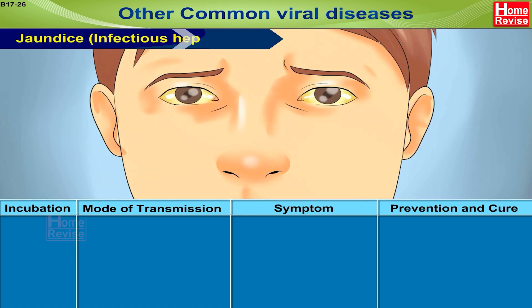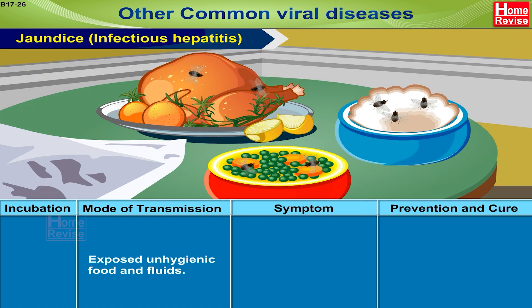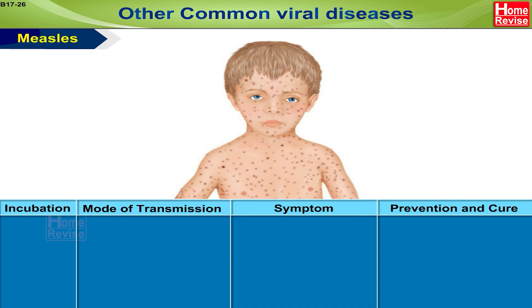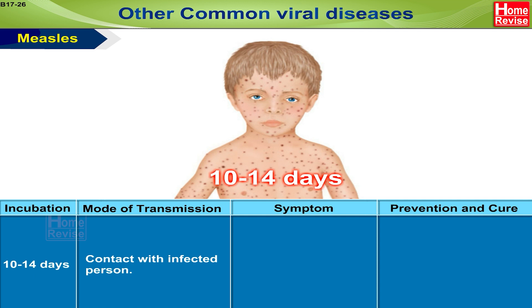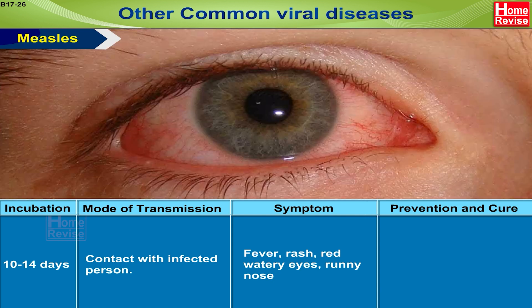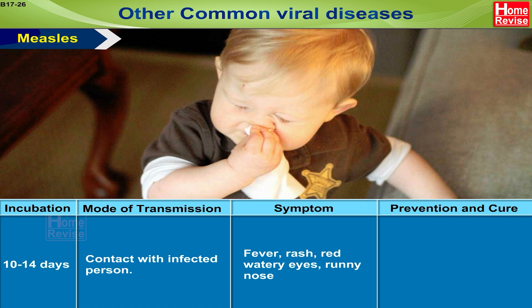Jaundice, or infectious hepatitis: mode of transmission is through exposure to unhygienic food and fluids. Symptoms include loss of appetite and yellowish coloration due to excess bilirubin, i.e., bile pigment in the blood, since liver cells are inflamed and unable to function normally. There is no specific prevention and cure. Measles: incubation period is 10 to 14 days; mode of transmission is contact with an infected person; symptoms are fever, rash, red watery eyes, and runny nose; prevention and cure is vaccine.